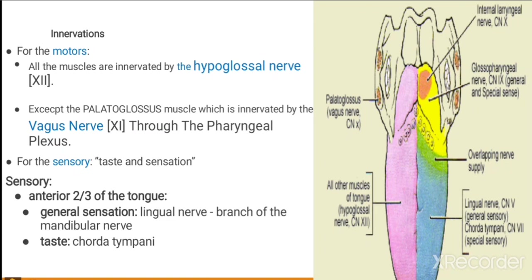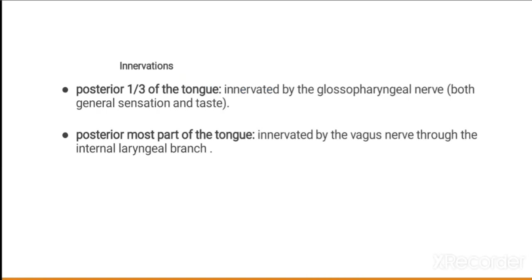General sensations include pain and temperature, while special sensations refer to taste. Taste from the anterior two-thirds of the tongue is received by the chorda tympani, and general sensations from the whole tongue are received by the lingual nerve. From the posterior one-third, sensations are received by the glossopharyngeal nerve, the 9th cranial nerve. The posterior-most part is supplied by the vagus nerve via its internal laryngeal branch.